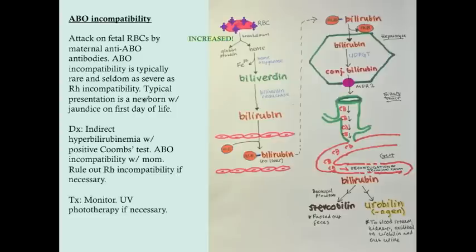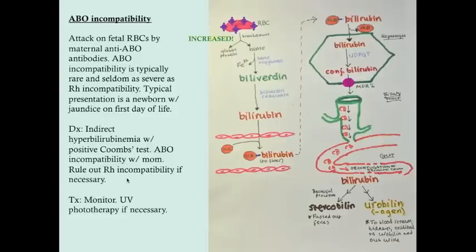ABO incompatibility is another possible way to have immune-mediated hemolysis. Just like in RH isoimmunization, you're going to get a positive direct Coombs test. For diagnosis, there will be a positive direct Coombs test, and you should note there will be an ABO incompatibility with mom — baby will be either A, B, or AB, and mom will be incompatible with that. You should rule out RH incompatibility if necessary, but it's very rarely as severe. Treatment is to monitor the baby, with UV phototherapy as necessary.